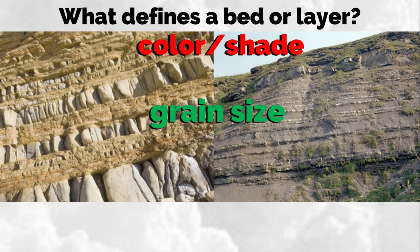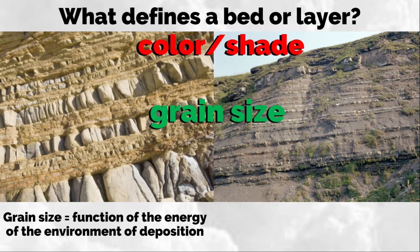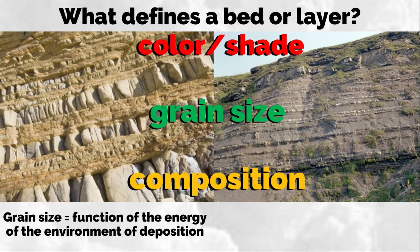Let's talk about grain size first. Grain size in sedimentary rocks is commonly a function of the energy of the environment of deposition. Fine-grained sediments generally reflect low energy and quiet settings — meaning they are protected from waves and strong currents. So grain size is a function of energy: fine-grained sediments come from low-energy environments.